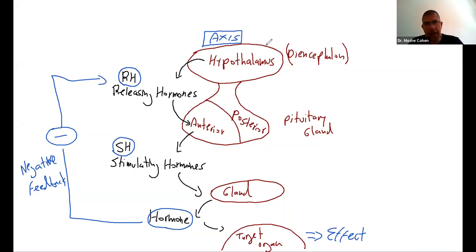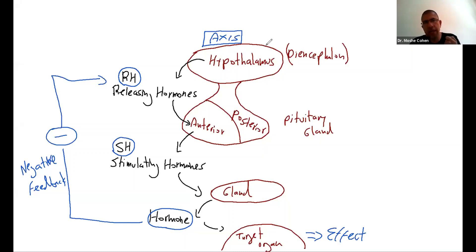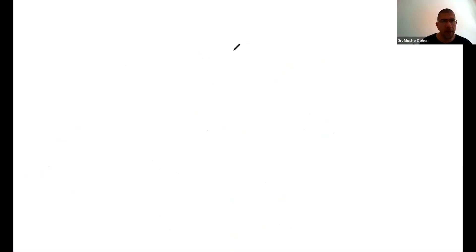Do you have any questions about the endocrine axis before I give you all the examples of endocrine axes in the human body? Is the concept clear to you? So what we do next, we will learn about each endocrine axis in the human body, and you will write it with me. It's very important to write the axis from the beginning. And for every axis, we will also speak about pathologies.